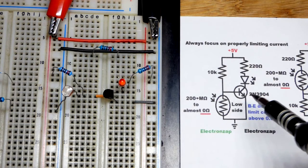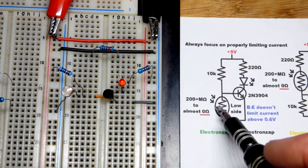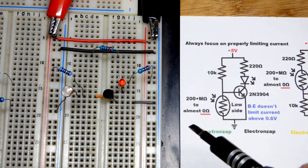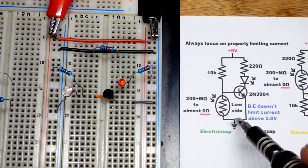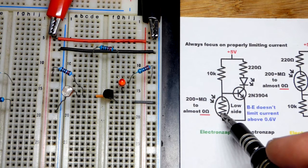In recent videos we looked at using an NPN bipolar junction transistor as a switch. We also looked at using a light dependent resistor as a voltage divider, and they combine pretty well together because the light dependent resistor is a very weak voltage divider.